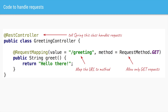We can create a class called GreetingController which has a method called greet. All this method does is return a string called "hello there". To make this GreetingController class a servlet, we have to add the Spring annotation called @RestController. This annotation tells Spring that this class will be handling some incoming requests. Above the method we will add another annotation called @RequestMapping where we specify the value as /greeting.